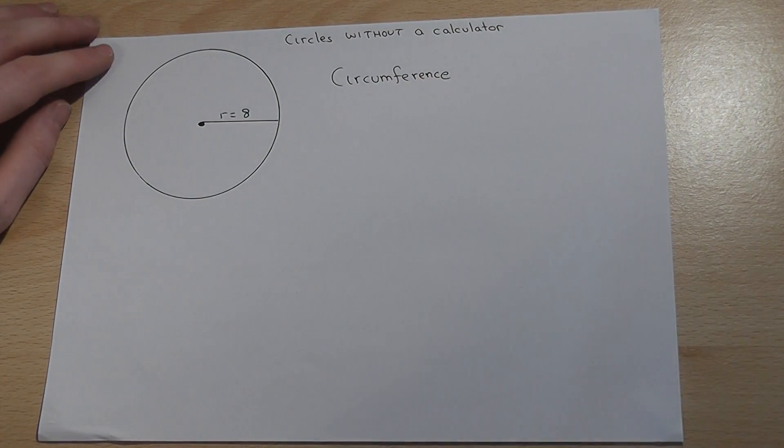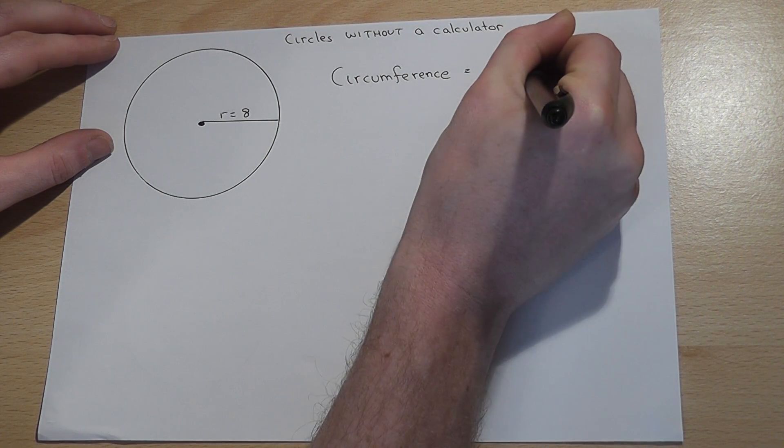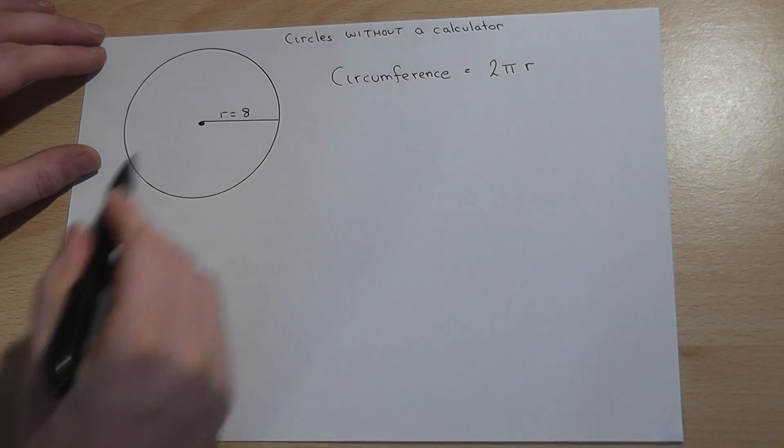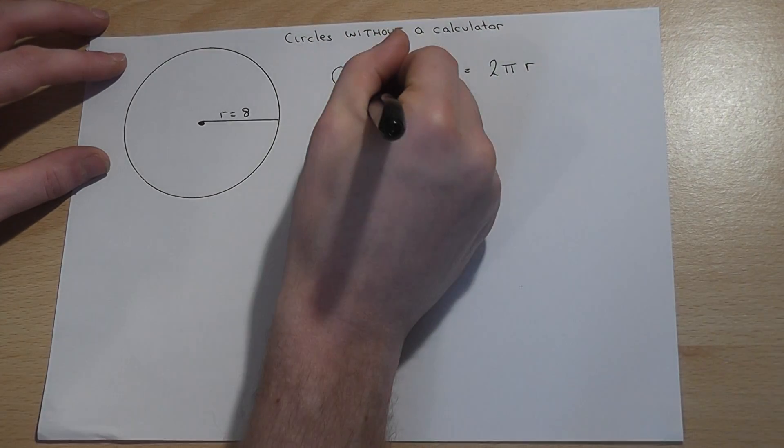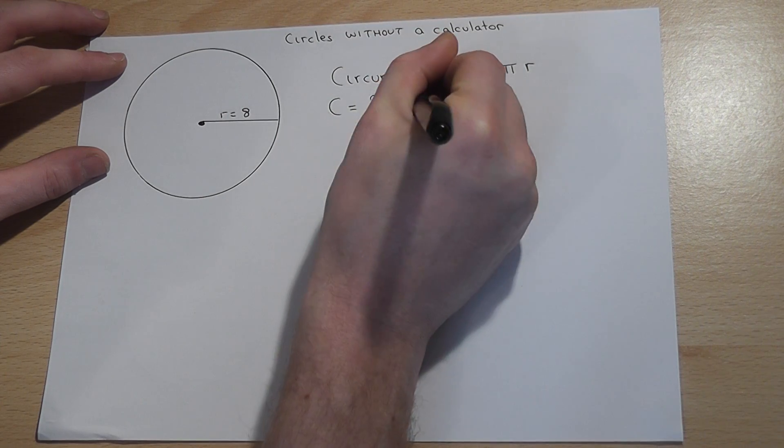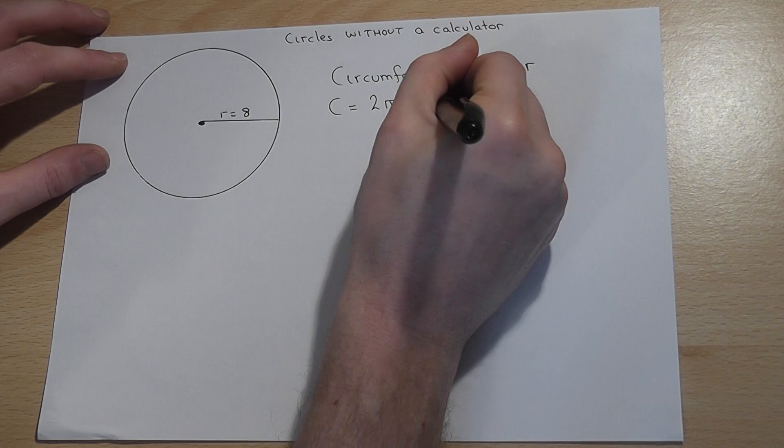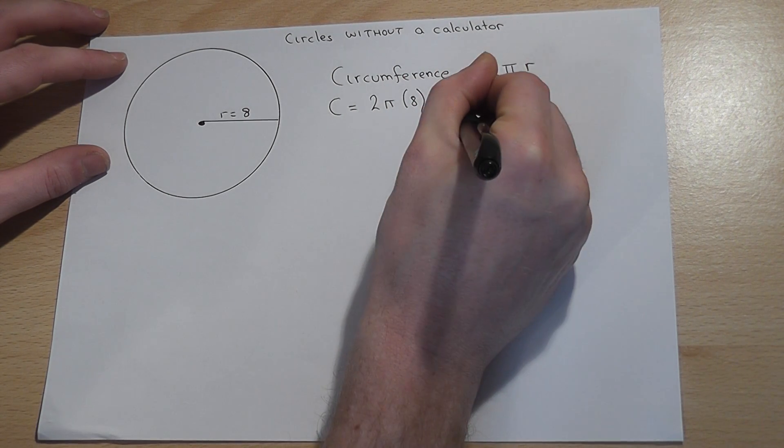The formula as we know for that is 2π times r. Our radius here equals 8, so the circumference equals 2π times 8. 2 times 8 is 16, so this equals 16π. That's in terms of π.